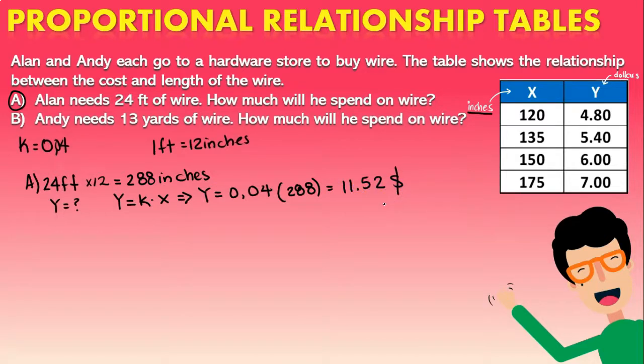So that is the amount of money that Alan is going to pay. Again you have to remember that the variable y is the amount of dollars, x is going to be the amount of inches, so we have to find out feet in inches and then we use the formula with the value of k we found out.